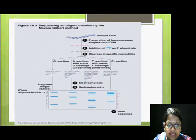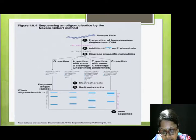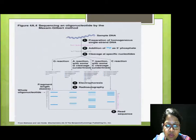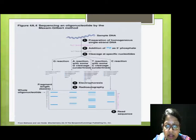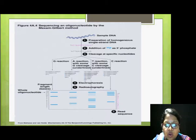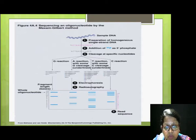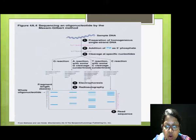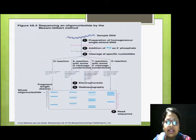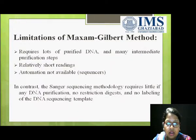The next step is reading the sequence. We read from the bottom of the gel because the smallest fragment has moved the lowest. For example, from the T and C eliquot, if there is a band only in the T lane and not the C lane, that band corresponds to T. If a band appears in both lanes, it corresponds to G. This is how we read and determine the DNA sequence using the Maxim-Gilbert method.